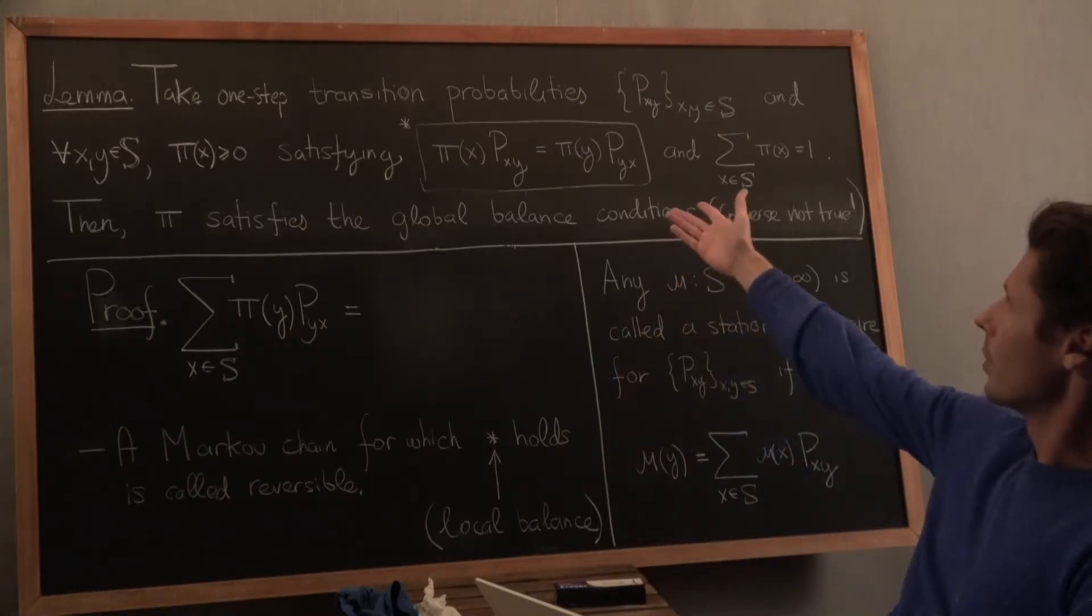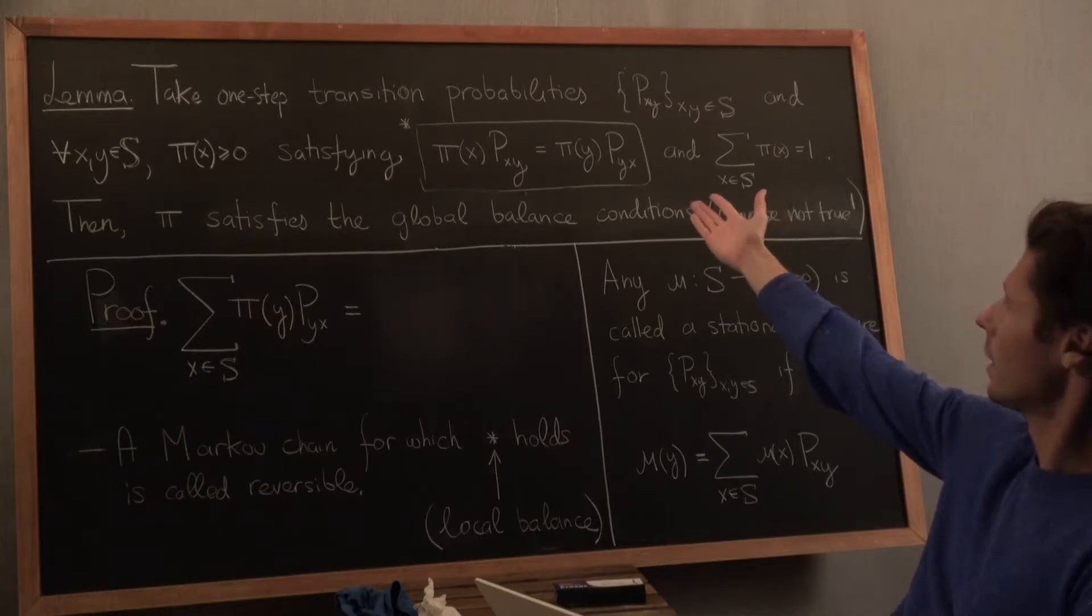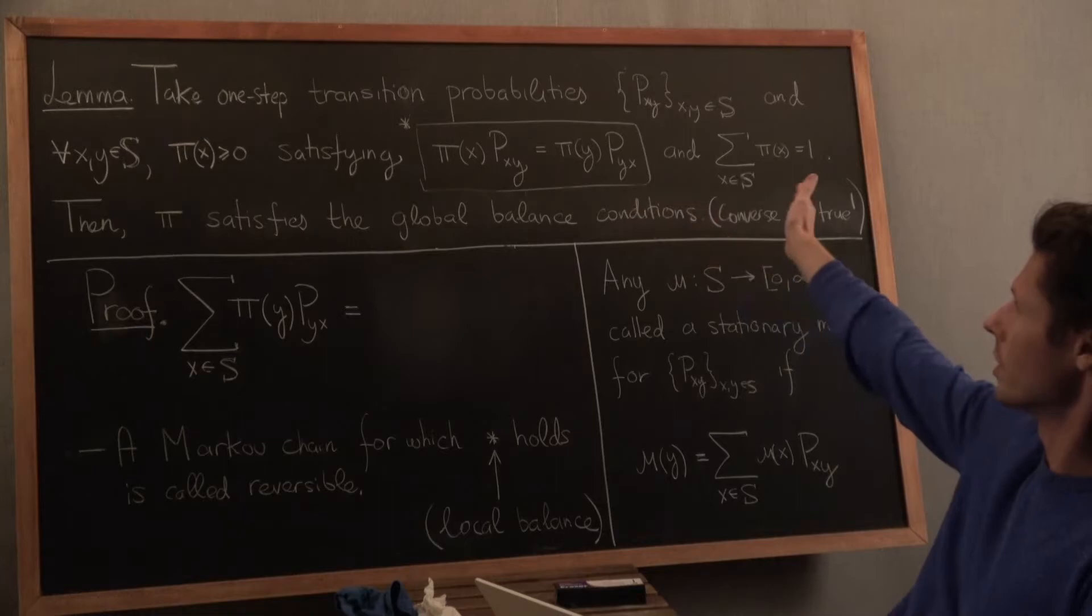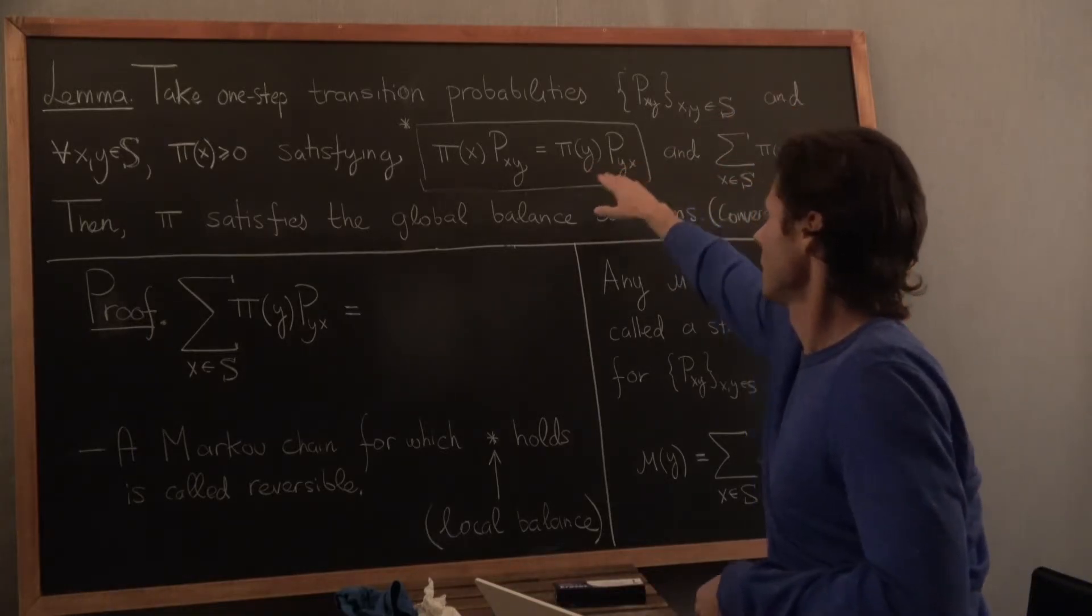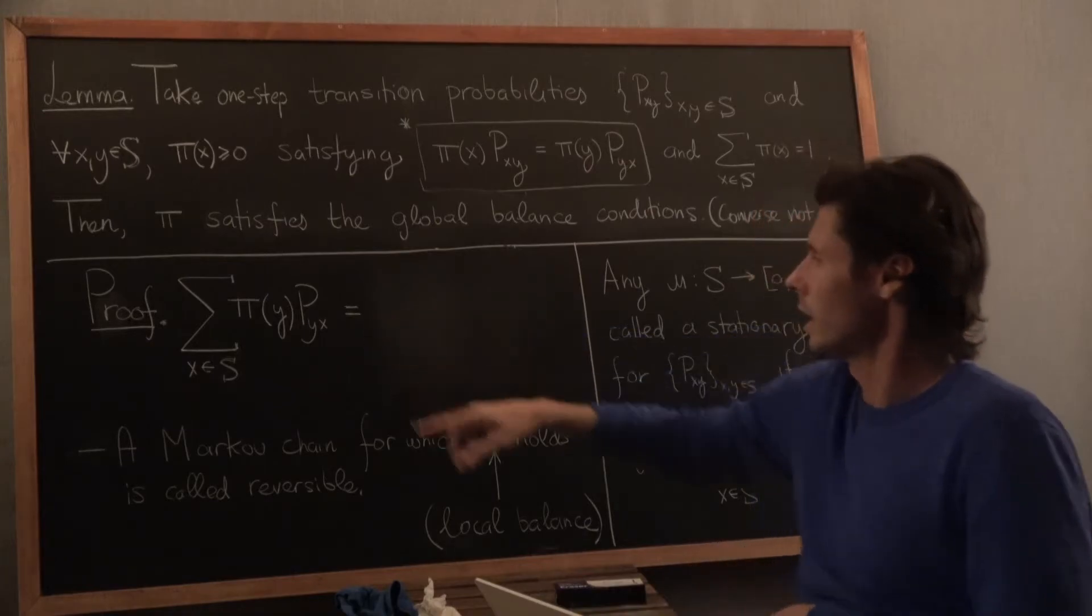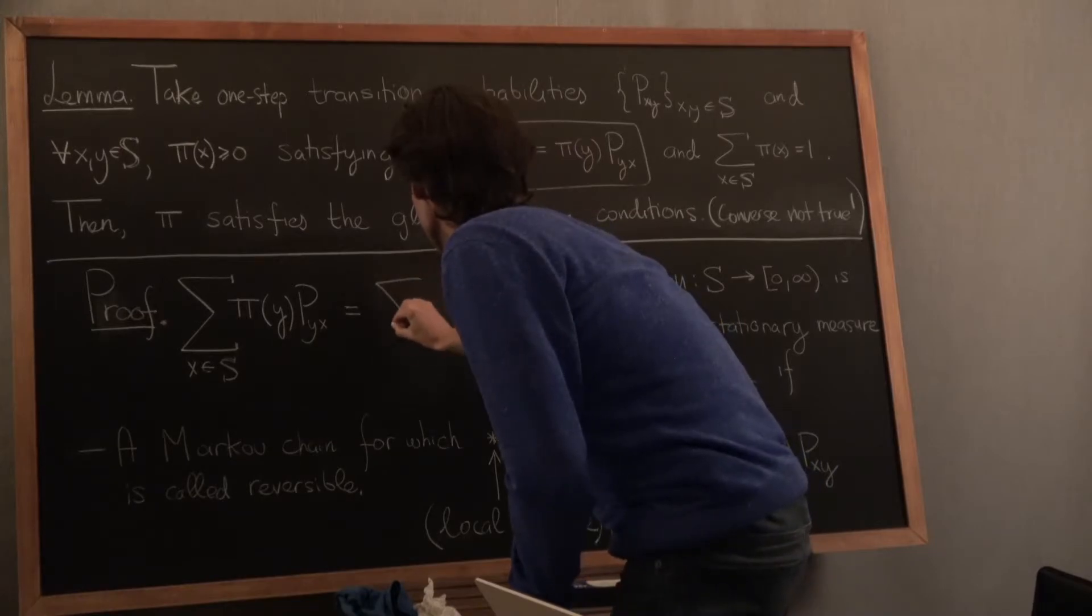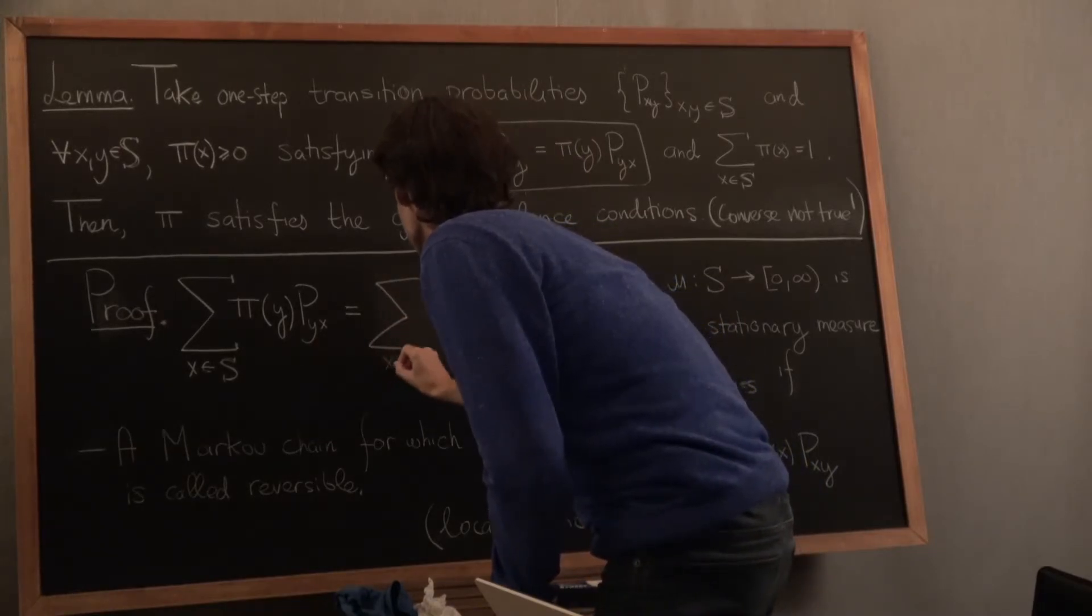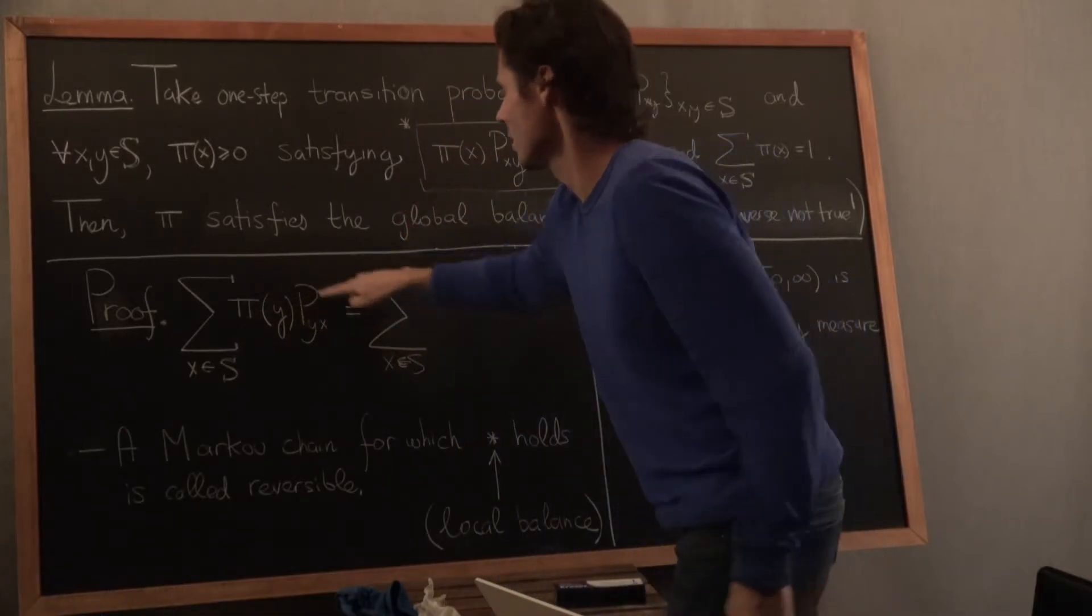So how do we prove this? We want to start with that and end up with global balance. I'm going to encourage you to sometimes just start with the right-hand side and not the left-hand side, even though here it doesn't matter. But there's not always a necessity to go from left to right. So I'm going to start with this side, which is what I wrote down there. And then I'm going to sum over x. And therefore, sum whatever this is equal to over x.